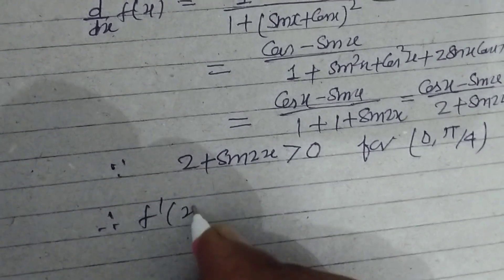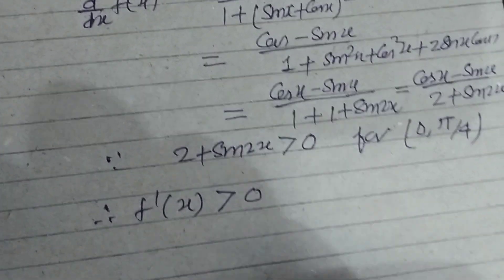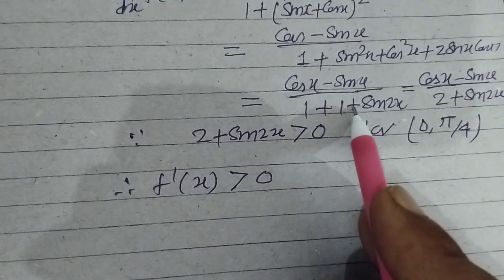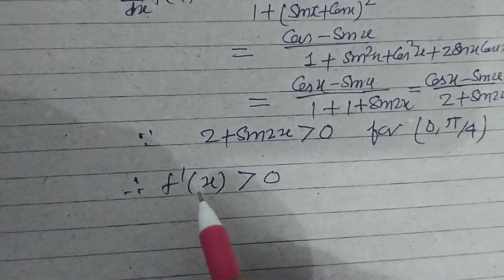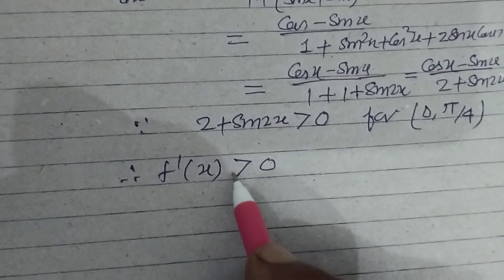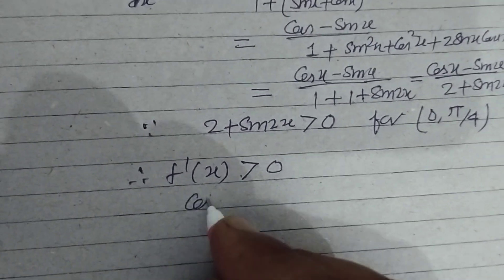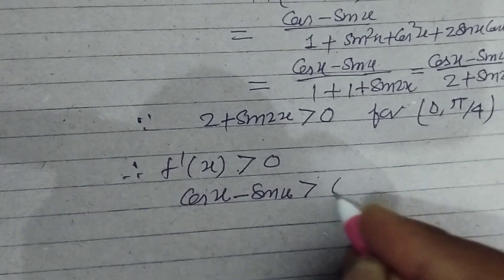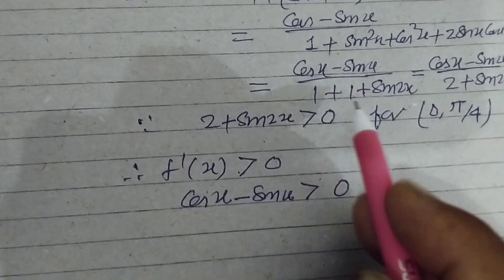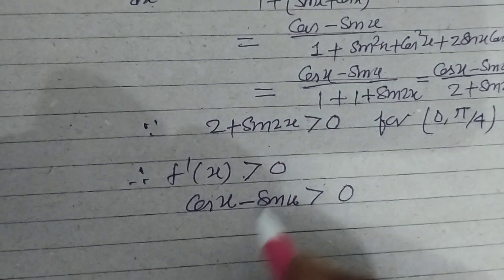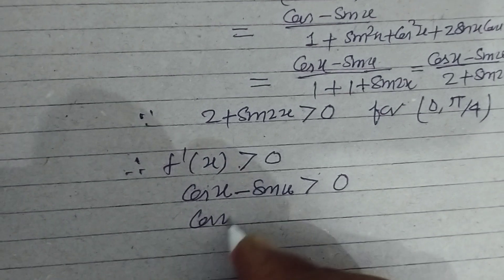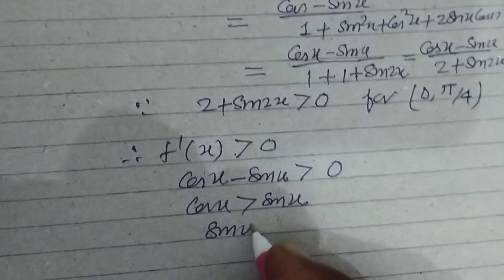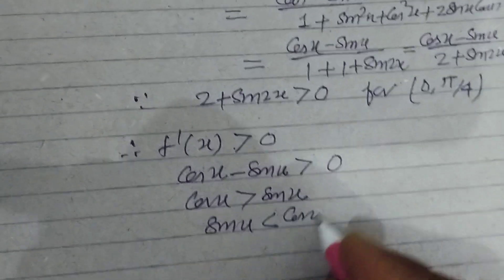Therefore f'(x) should be greater than 0. If this is greater than 0, then the function f'(x) is also greater than 0, and cos x - sin x is greater than 0. The numerator is also greater than 0, which means cos x is greater than sin x, or sin x is less than cos x.